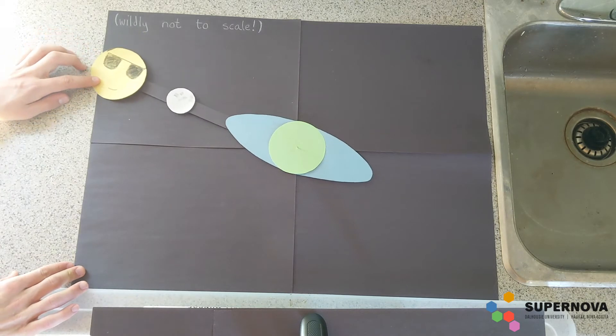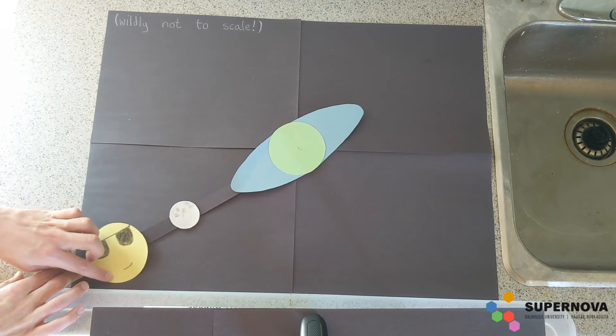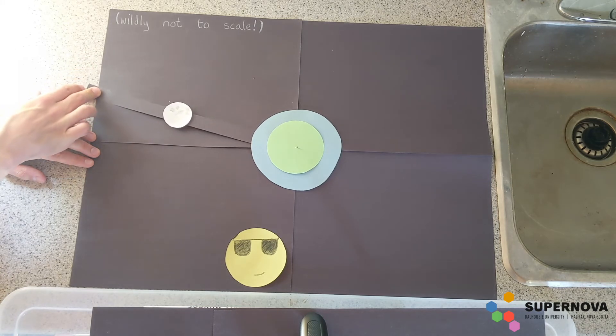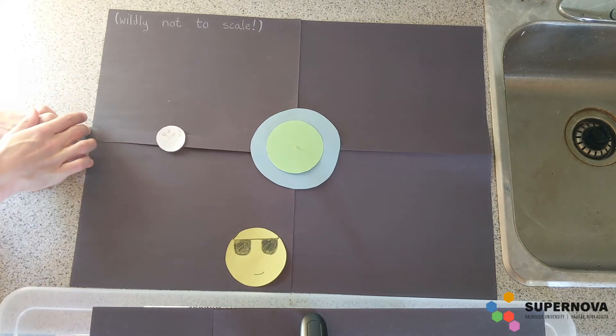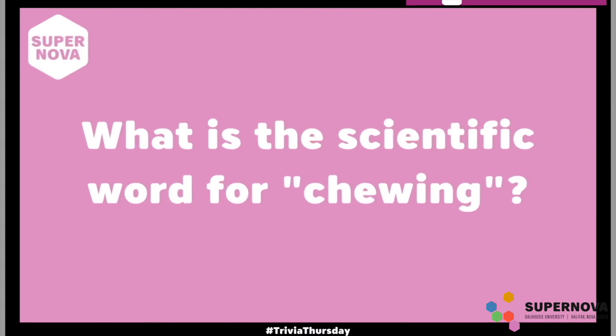One more interesting thing about the tides: while the moon is the main thing that causes the tides, the sun also plays a role. So if the sun and the moon are lined up in the right way, they might be able to make a really high tide. Or if the sun and the moon are pulling in opposite directions, they might make a lower than normal tide. We'll move on to our fifth and final category now, and last but not least this week, we have biology.